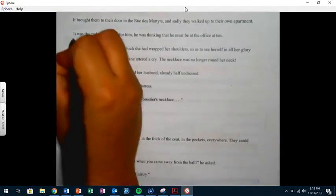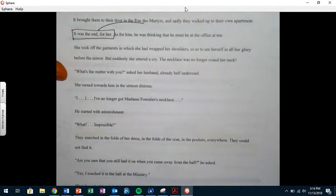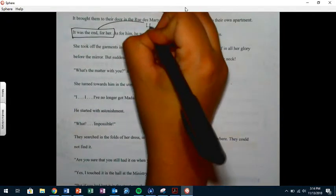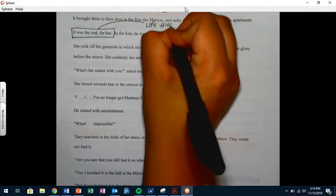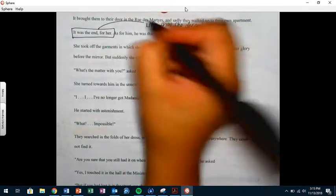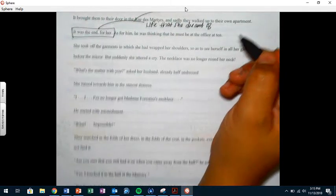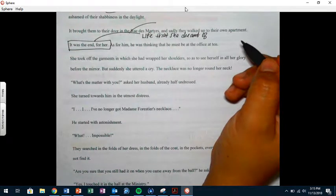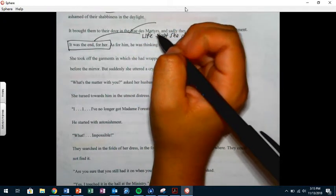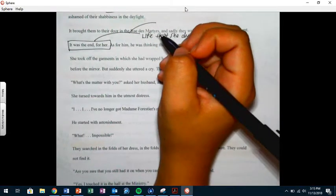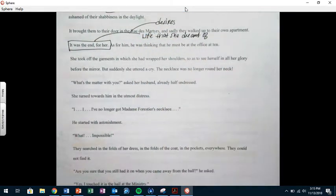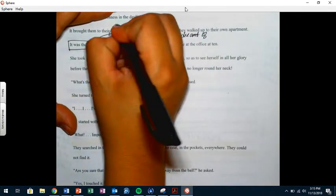It brought them to their door in the rue des Martyrs and sadly they walked up to their own apartment. It was the end for her. Now let me ask you, it was the end, Alondra. What exactly was the end? The life that she dreamt of. What else was the end? That illusion. Her aspirations, her desires to be wanted, to be sought after. What else ended for her?